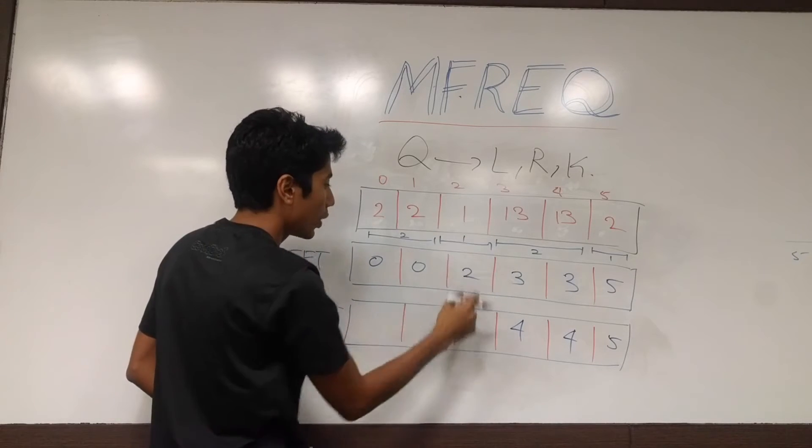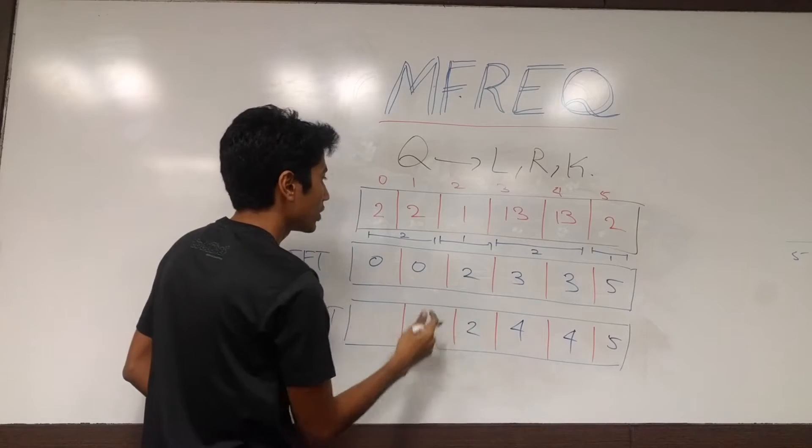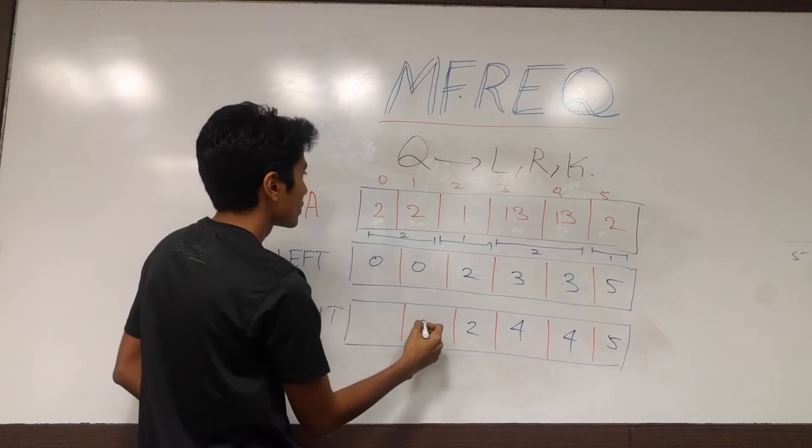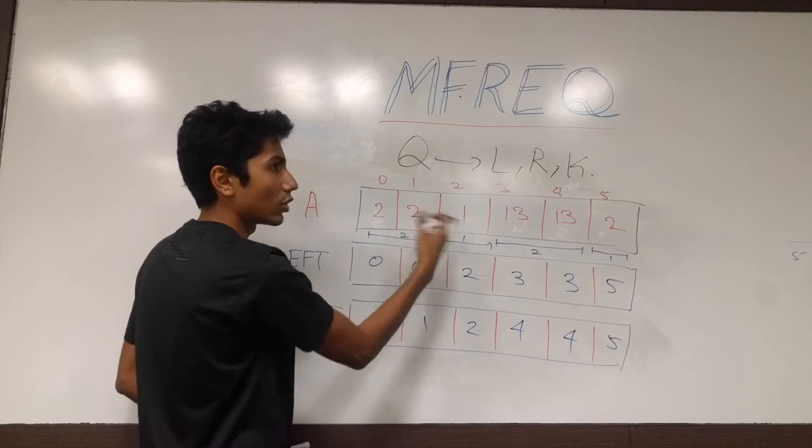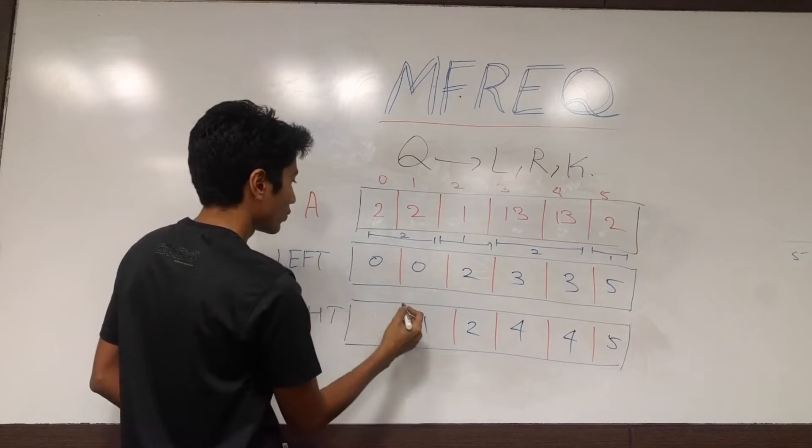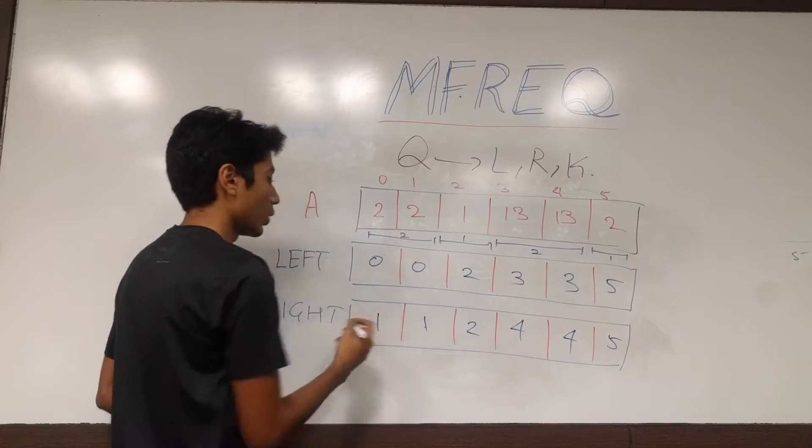And element 1 has, again, 2 stored in it. Element 2 has 1 stored in it, because they are not equal. And this element has this value stored in it, 1.